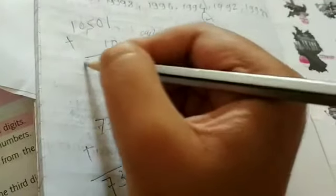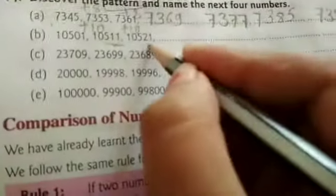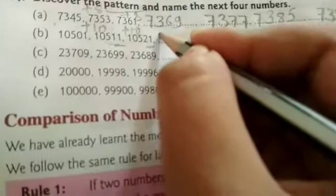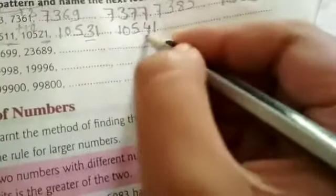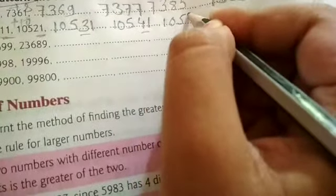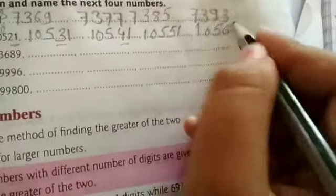If you add 10, you get 10,531. So here, in the last two digits — 11 plus 10 is 21, keeping 105. Then 21 plus 10 is 31, so 10,531. Then 31 plus 10 is 41, so 10,541. Then 41 plus 10 is 51, so 10,551. Then 51 plus 10 is 61, so 10,561. In this same way, you have to complete the pattern.